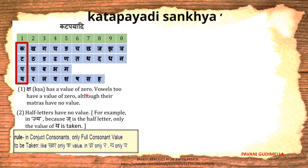Ksha has a value of 0. All vowels are considered to be 0. Half letters do not have any value. If you encounter a combined letter like 'Jya', we ignore the half part — 'Ja' is ignored and only 'Ya' is considered. Only the full consonant value is taken. For example, only 'Kha' will be taken — the first Kha, not the half one.